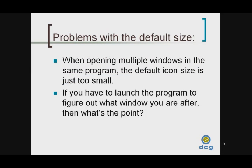One of the problems with Windows 7, as I see it, is that when you open multiple windows in the same program, the default icon size is so small that you really can't tell what the different programs you have running are. I think Microsoft got a lot of things right with Windows 7, but one of the things I think could be improved on is this icon size issue. It's something that comes up from time to time with our clients, so I'm going to show you today how to fix it.